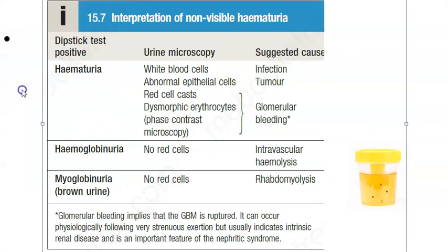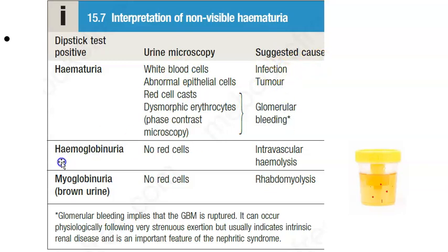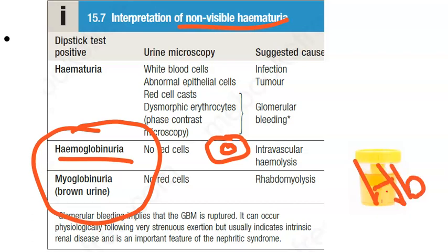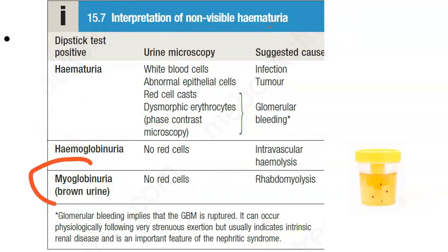Coming to invisible, i.e., non-visible hematuria - it can happen because of infection, tumor, and glomerular bleeding. Two extra terminologies are added here: hemoglobinuria and myoglobinuria. Under non-visible hematuria, hemoglobinuria means only hemoglobin is present, not the intact RBC. Finding hemoglobin in the urine means there is lysis of RBCs - intravascular hemolysis is happening.